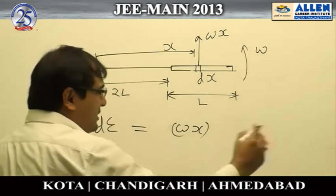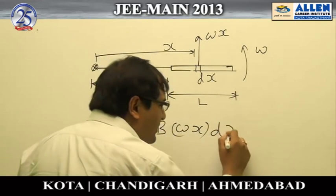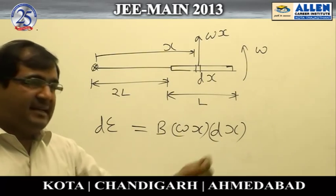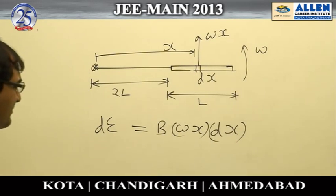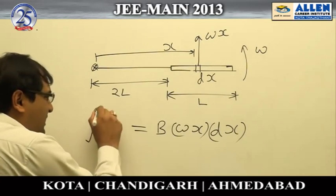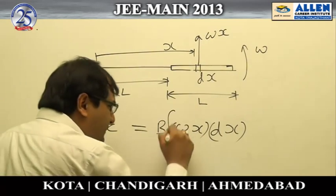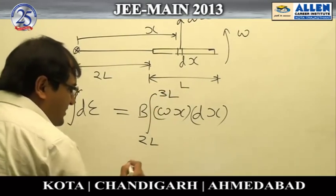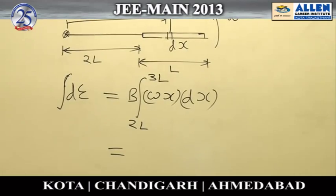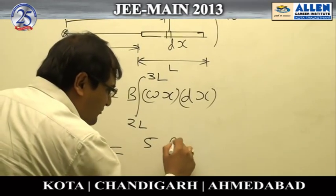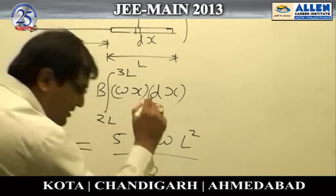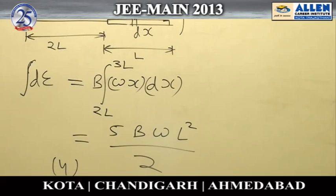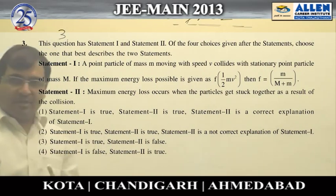The motional EMF generated in this element is ωx · B · dx, where B is the magnetic field, ωx is the velocity, and dx is the length of the element. To calculate the total EMF we integrate from x = 1 to x = 3, and the result is 5Bω L²/2. Therefore, option number 4 is the correct answer.